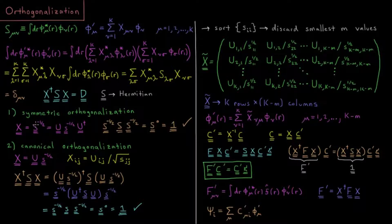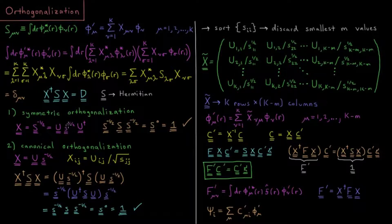To get the S to the minus one-half matrix, we take the unitary matrix which diagonalizes S, make that diagonalization, and then once it's diagonal, take each diagonal element to the negative one-half power. There is a physical chemistry math review playlist video specifically on this type of operation, so if this seems confusing, please review that video. We then do the reverse unitary transformation to get our S to the negative one-half matrix to use for orthogonalization.